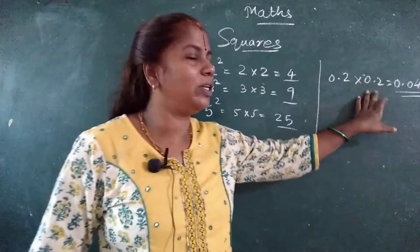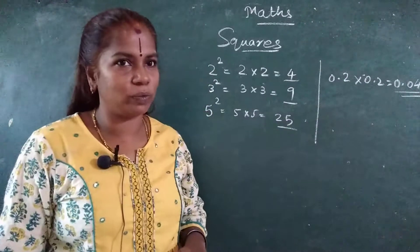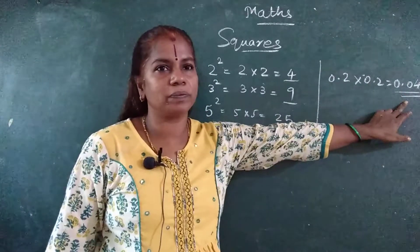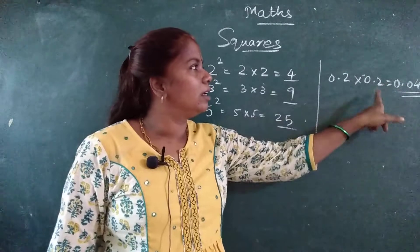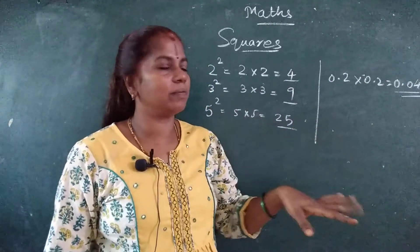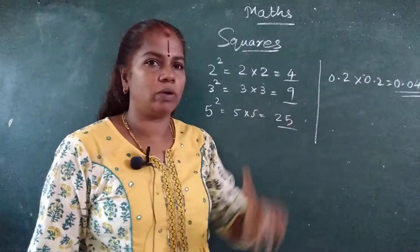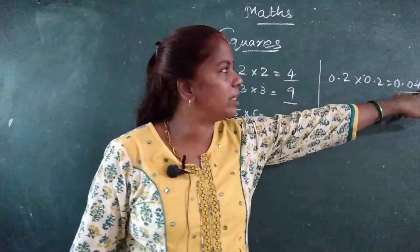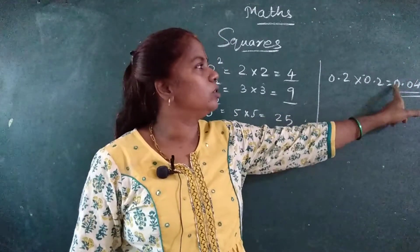The shortcut method to find the decimals. How I did? 0.2 into 0.2. 2 2's are 4, I know. I have written 4. Then see after 0, how many decimals are there? One, two. So 2 digits I have to leave from that side. One, two. 0.04.